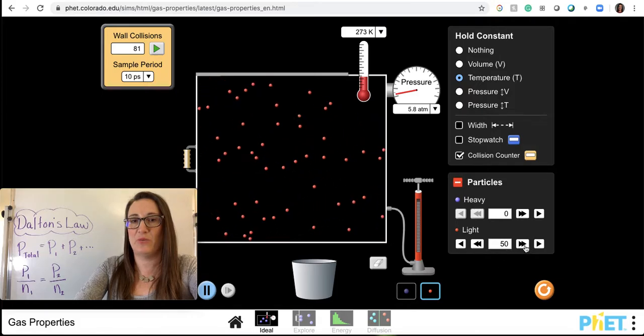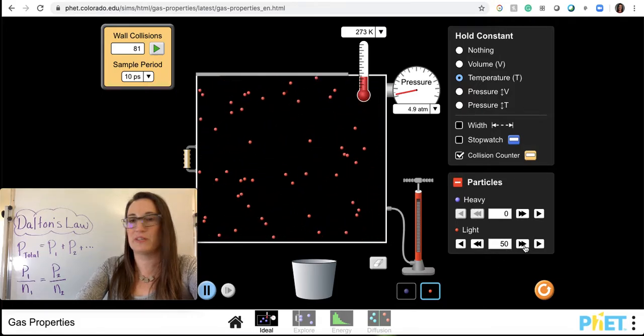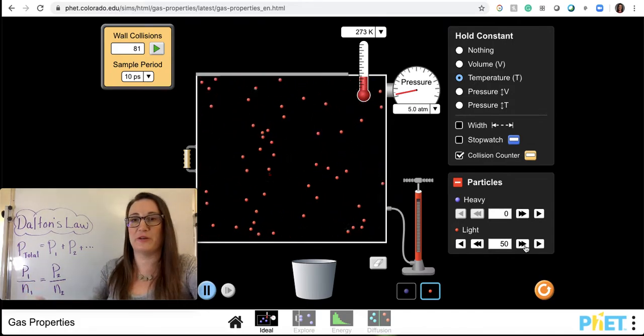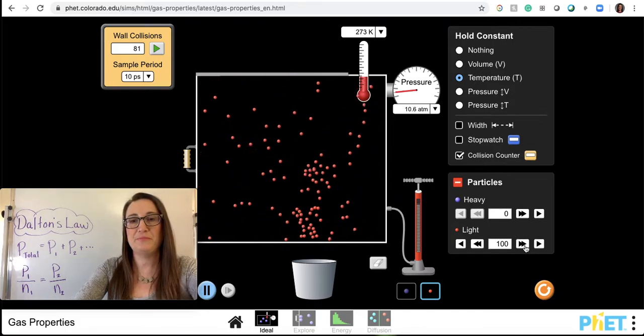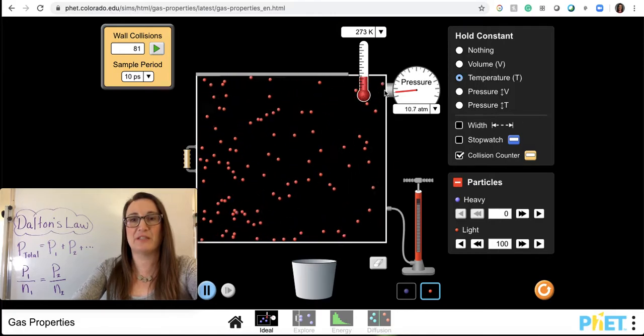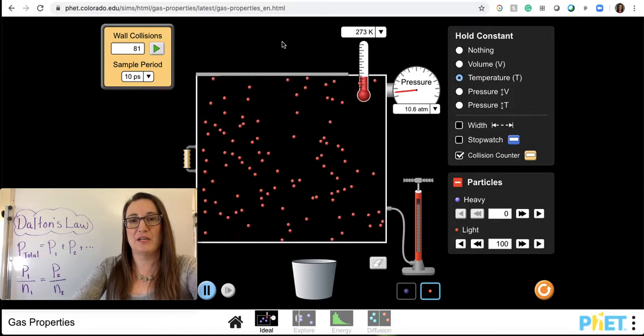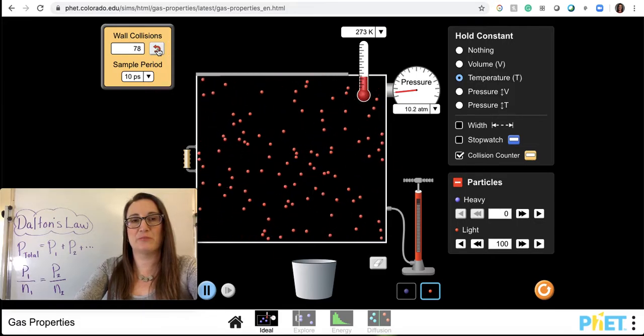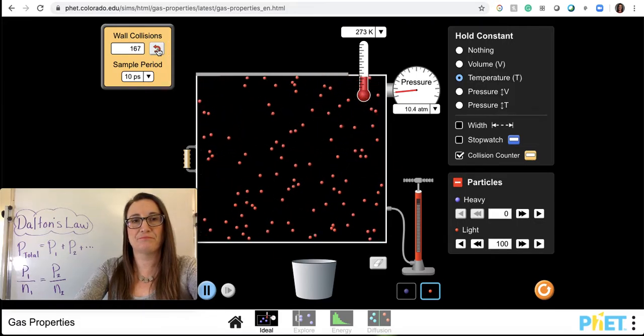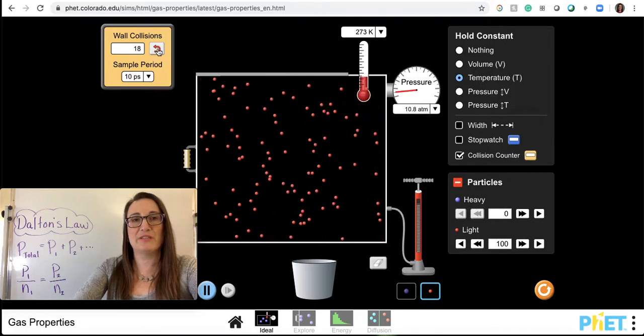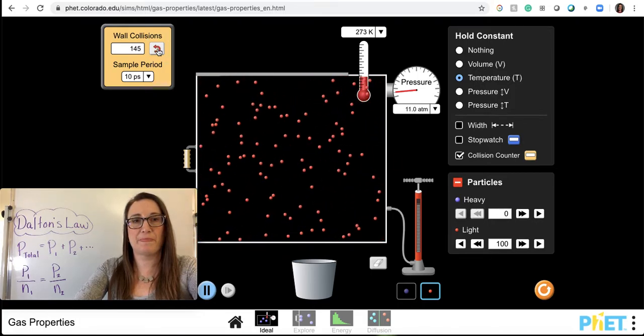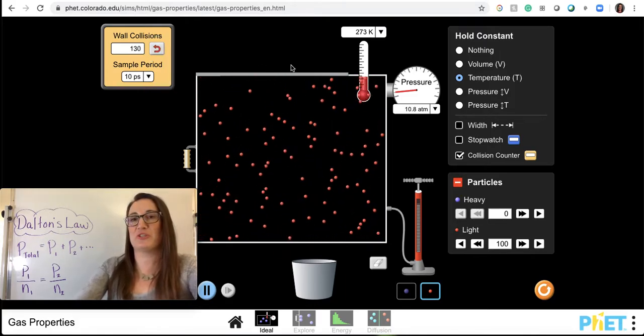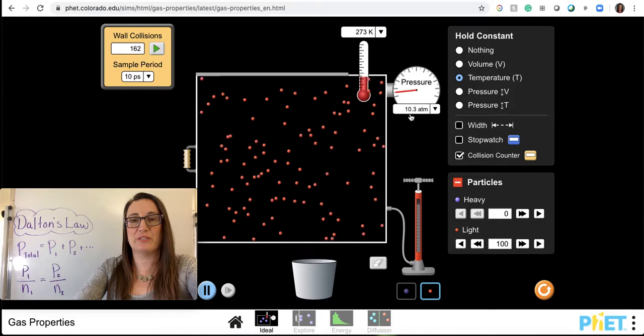Next I'm going to up this to be 100. Make a prediction of what you think is going to happen with the pressure as I go from 50 to 100 particles, keeping the temperature constant and keeping the volume constant. I'll do a collisions with the walls of the container count, which is the pressure. So about 170. So it looks like the collisions have doubled. And we'll do one more, approximately. And you can see that the pressure went up to about double also, about 10.